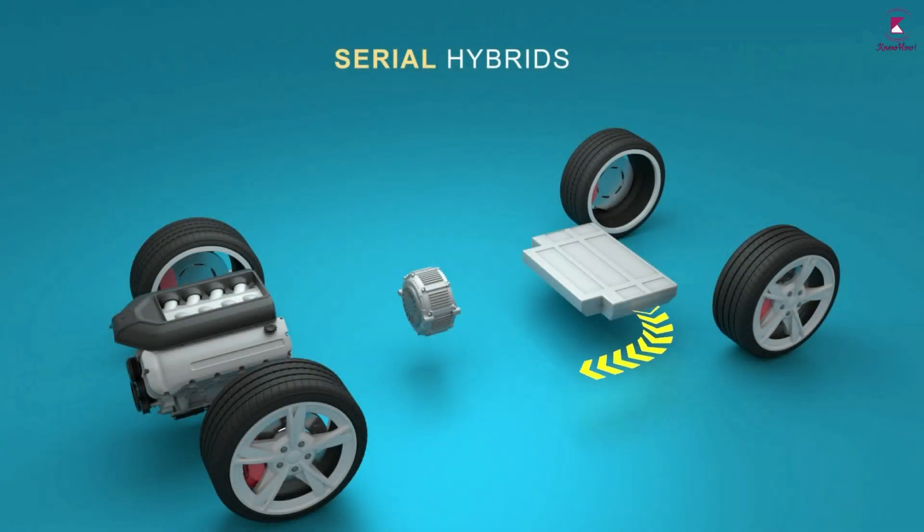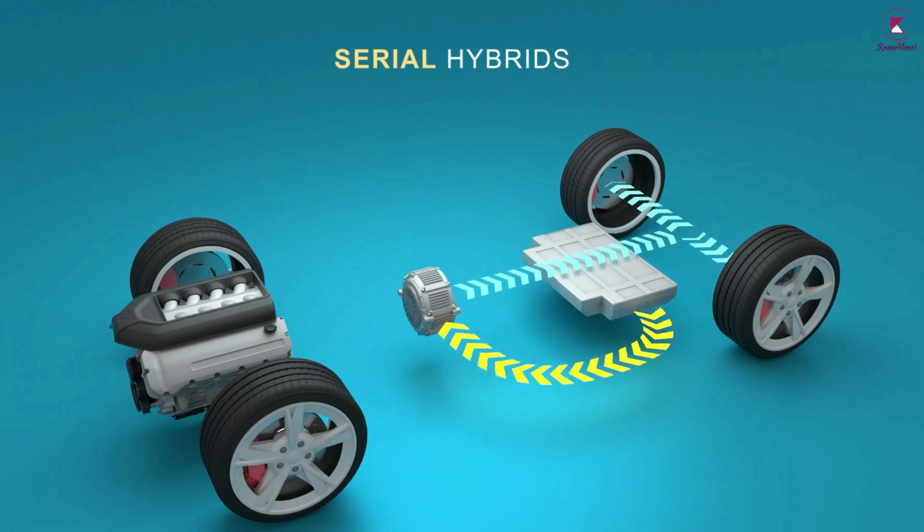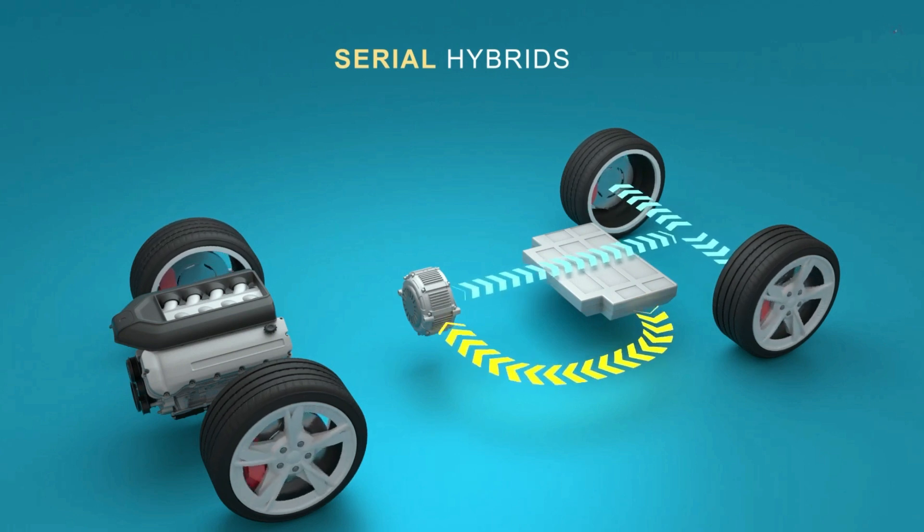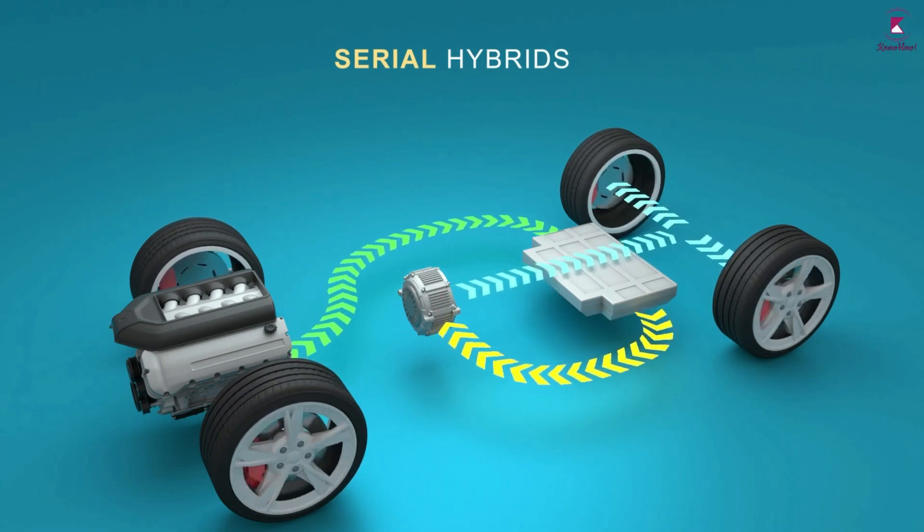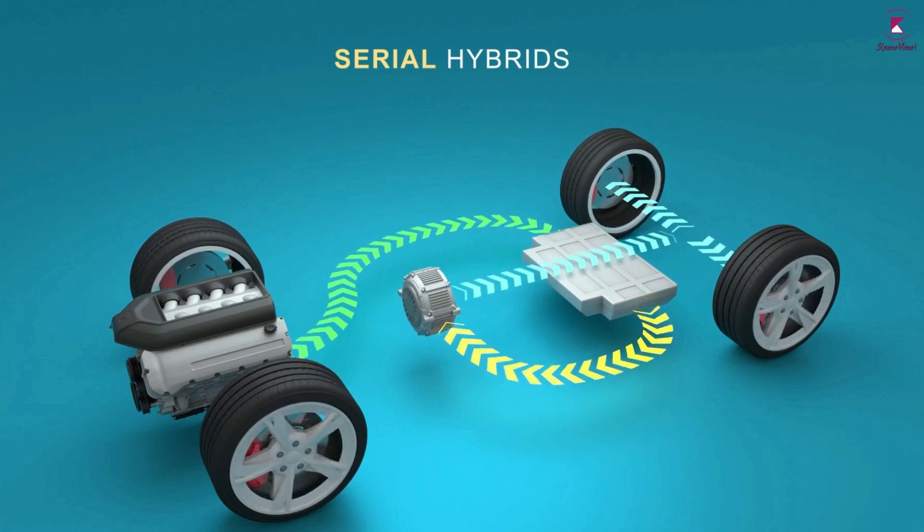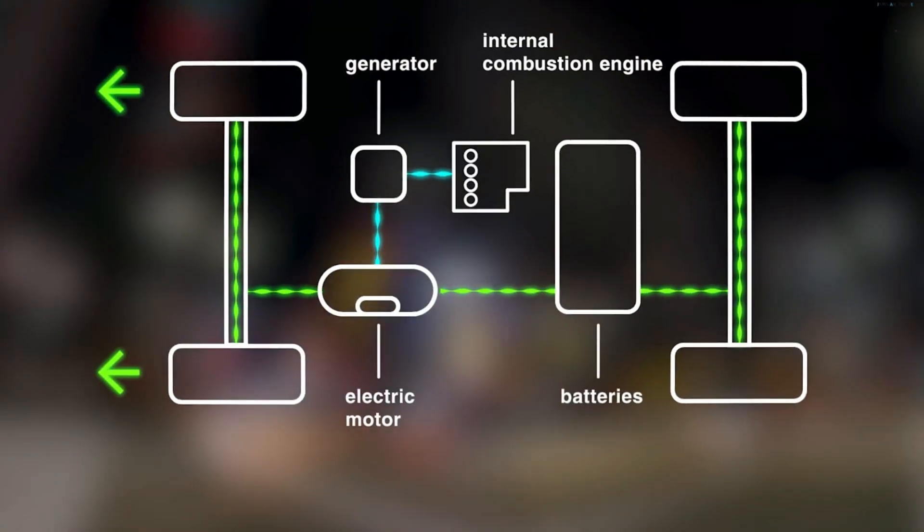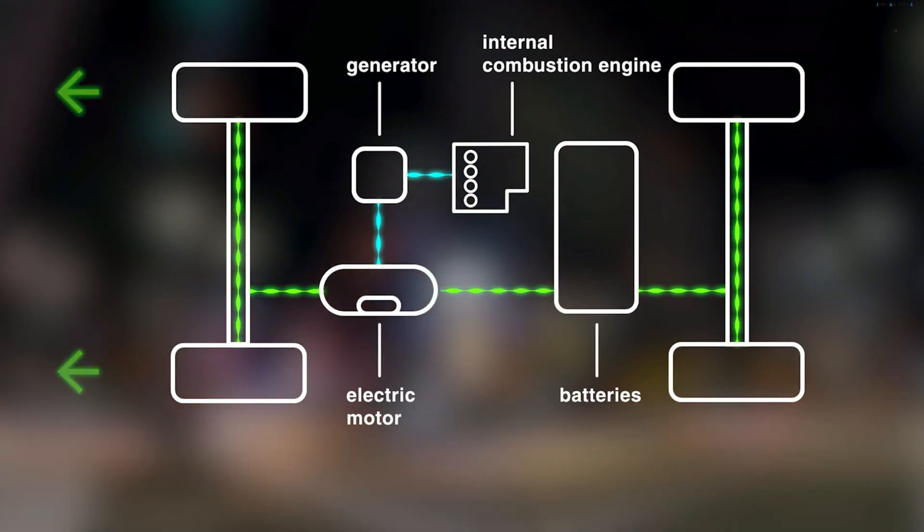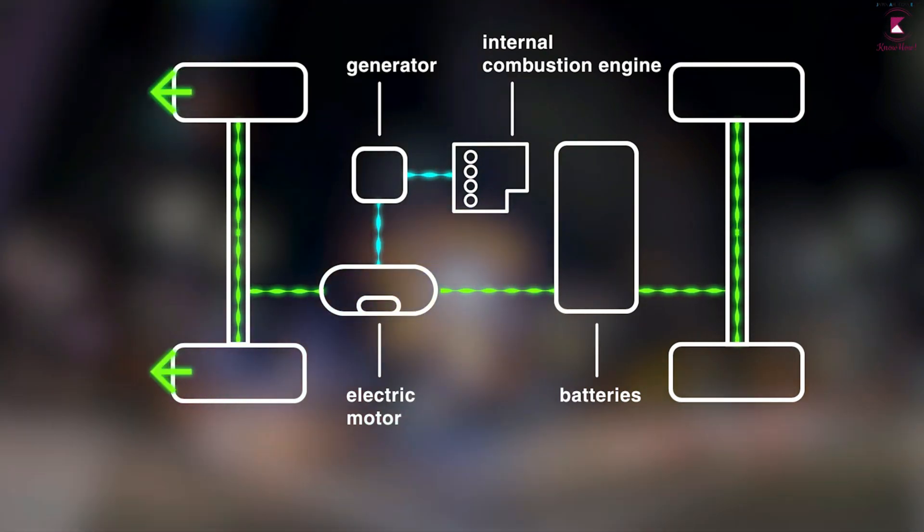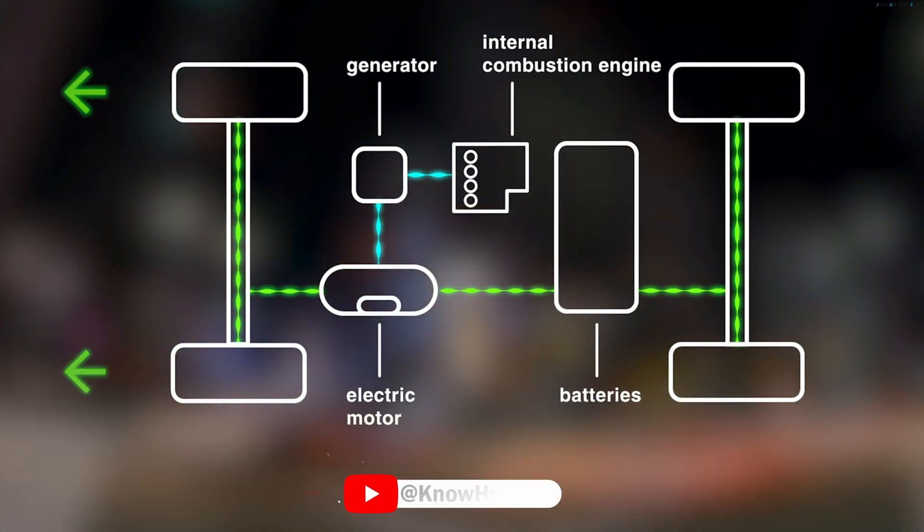Series hybrids: in this hybrid mode, the gasoline engine is not connected to the wheels and is only used to produce electricity for a generator that serves energy to recharge the battery. There is never physical mechanical contact between the engine and the wheels, and the electric motor serves to provide all the propulsion.